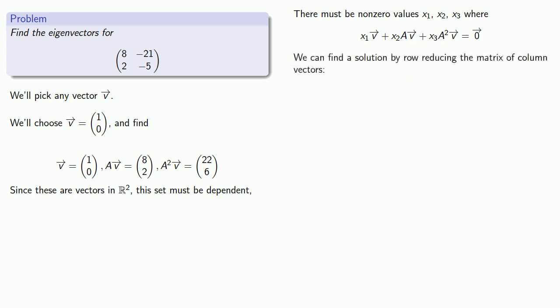And we can find a solution by row reducing the matrix of column vectors. So we'll take our matrix of column vectors and put it into row echelon form. Well, it's already in row echelon form, but we might want to simplify it a little bit. We can factor a 2 out of our second line and we can parameterize our solutions.